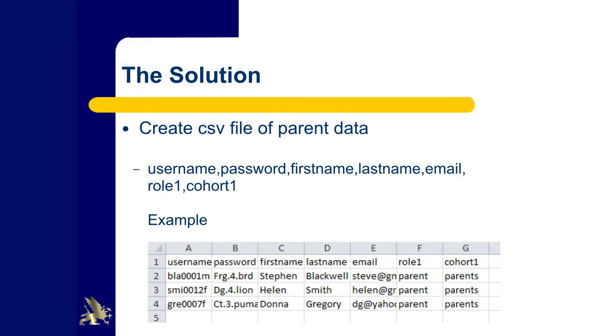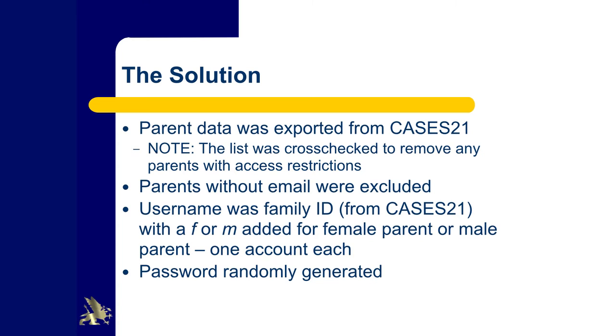You'll need to create a CSV file of parent data with a username for each parent, password, first name, last name, email, and then the role and the cohort you want to add them to. We grabbed our data from CASES 21, the Department of Education's database. We deleted parents without an email address, manually removed any parents with access restrictions to children, and used the family ID with an F or M prefix as the username, plus a randomly generated password.